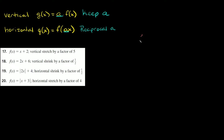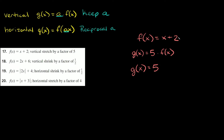Number 17: f of x equals x plus two. It says vertically stretch it by a factor of five. For a vertical stretch, g of x equals five times f of x. We keep the factor as five, so g of x equals five times x plus two. Distributing, g of x equals 5x plus ten.